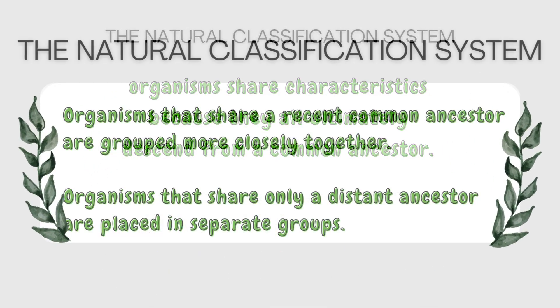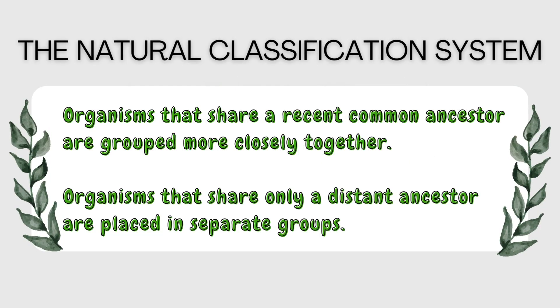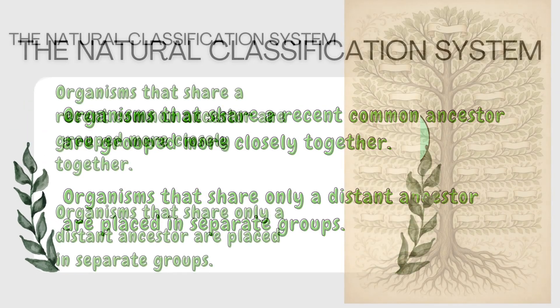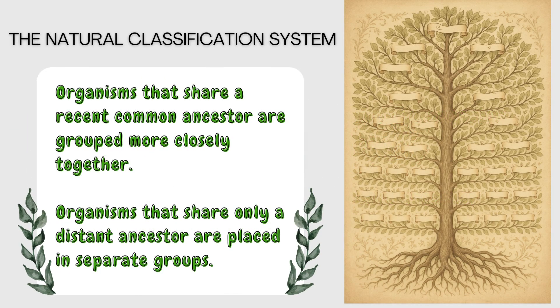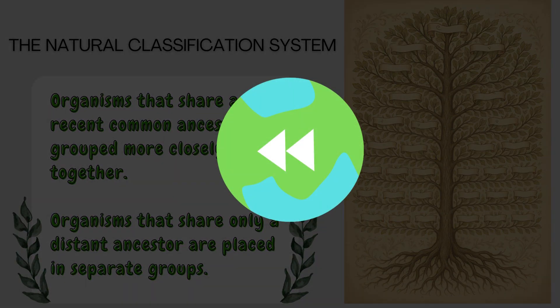Organisms that share a recent common ancestor are grouped more closely together, while organisms that share only a distant ancestor are placed in separate groups. In other words, classification is like drawing a family tree of life — the closer two organisms are on the tree, the more closely related they are. This is an important concept, so I suggest you rewind the video and watch again to understand better.